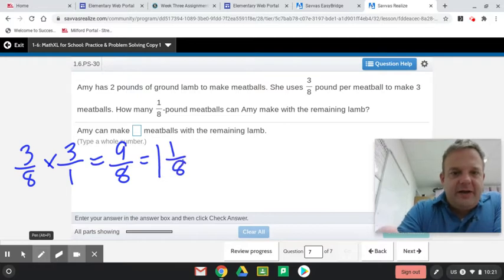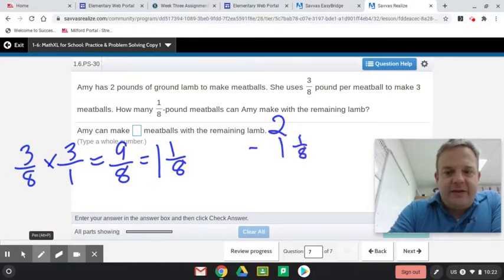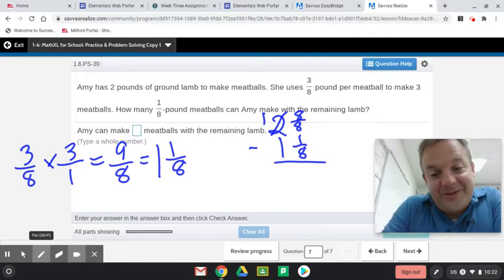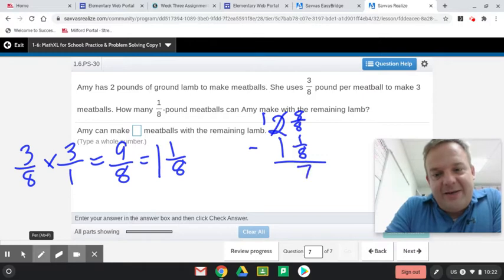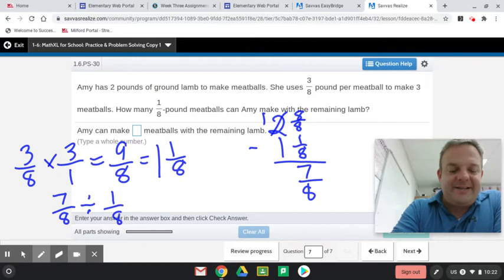3 eighths times 3 equals 9 eighths. That's 1 and 1 eighth. So, now, 2 minus 1 and 1 eighth equals what? Well, we're going to have to borrow to get an 8 out of 8. 8 out of 8 equals 1. So, now, we have 1 and 8 out of 8, which is equal to 2. Right, guys? So, 8 minus 1 is 7 over 8. So, just 7 eighths remaining. So, now, you have 7 eighths remaining, guys. So, we go 7 eighths divided by the 1 eighths. How many 1 eighths are in 7 eighths is what that's saying.